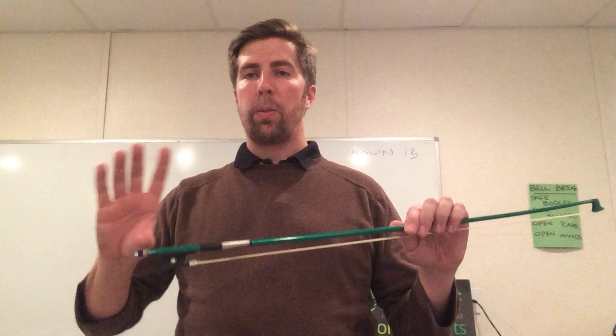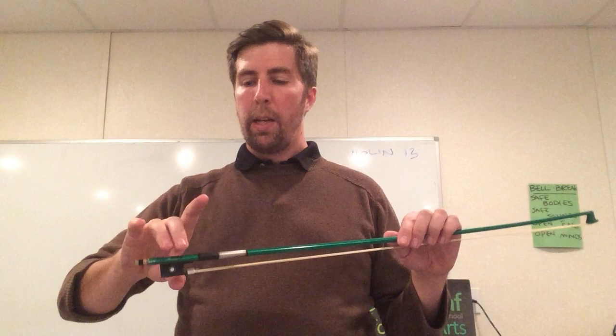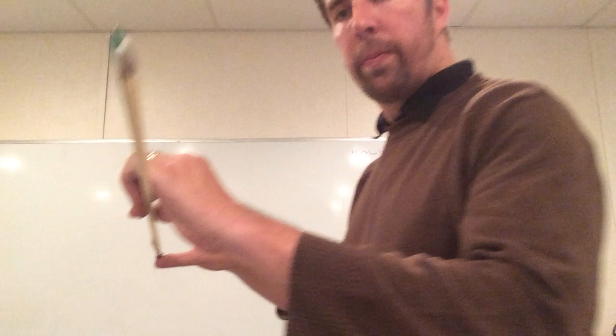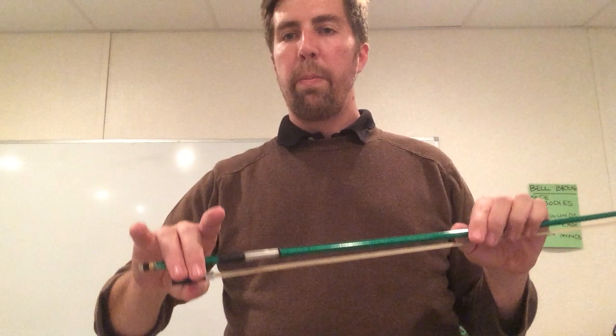For this bow hold, we're going to take our hand and find the frog of the bow. Take our right hand, take the middle fingers of our right hand, and we're going to pinch around the frog. Our thumb is going to sit under the frog. The end bone of our thumb is going to be resting directly under the frog.